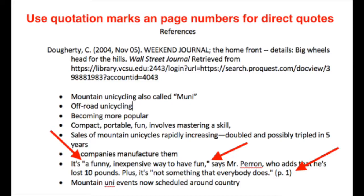I repeat this process for each of the articles I read. I read the article, highlighting main ideas, details, and quotes as I read. Then I write the main ideas, details, and direct quotes in bullet note form on my References page. When I am finished, I have a simple annotated bibliography.